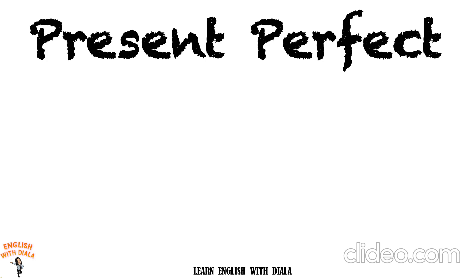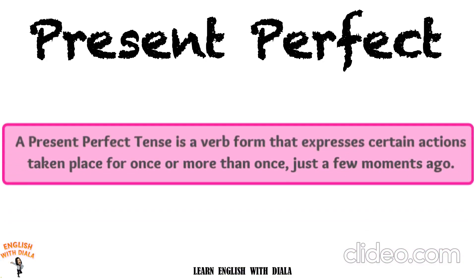What is a present perfect? A present perfect tense is a verb form that expresses certain actions taking place for once or more than once, just a few moments ago.